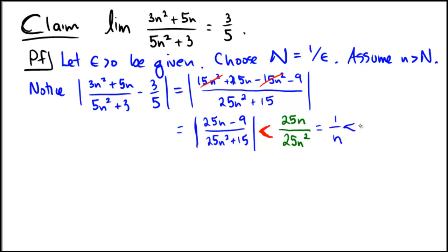I know that that's smaller than 1 over capital N from my assumption, because capital N was smaller, so 1 over capital N becomes larger. This is exactly the same as 1 over 1 over epsilon, because of the choice that I made for capital N, and that of course is exactly equal to epsilon. So I ended up showing that this expression is less than epsilon, which is exactly what we need in order to complete the proof.